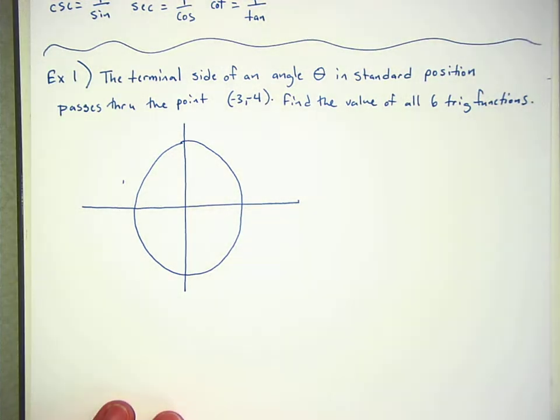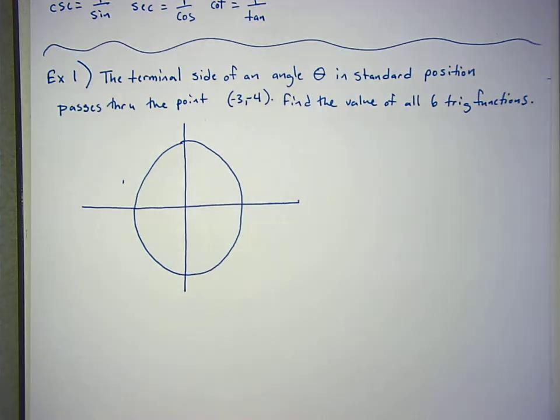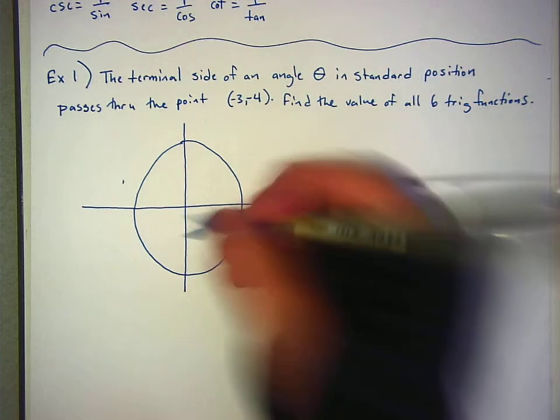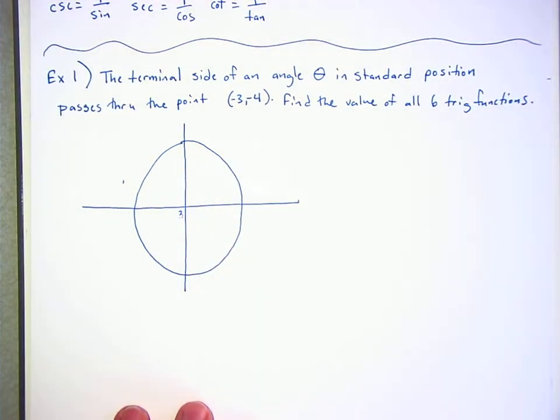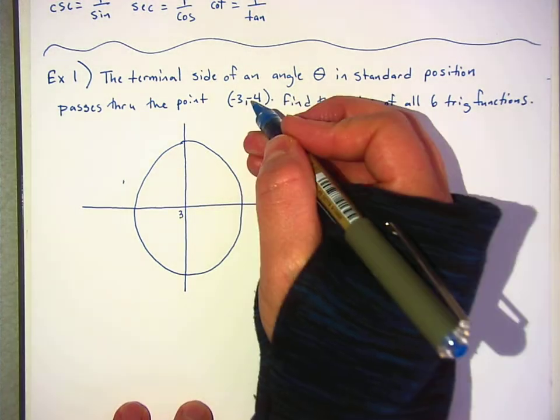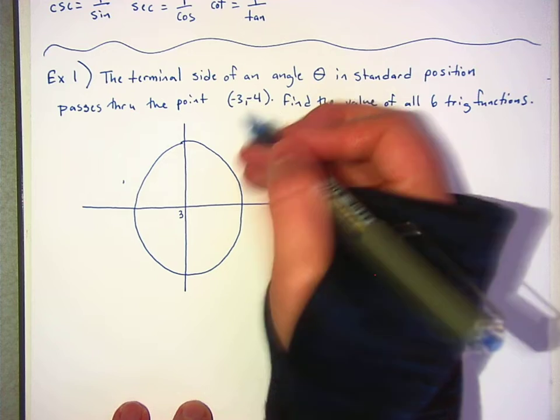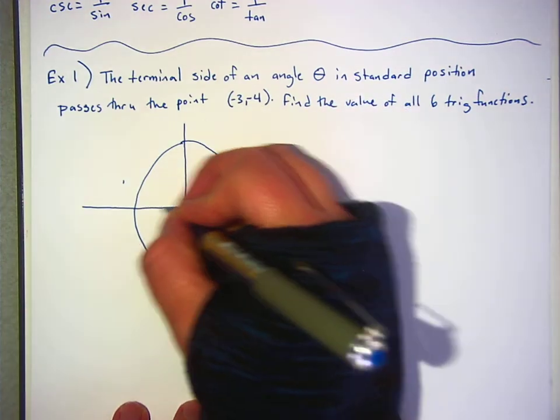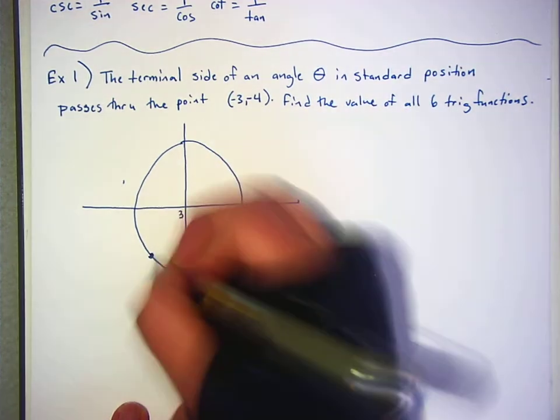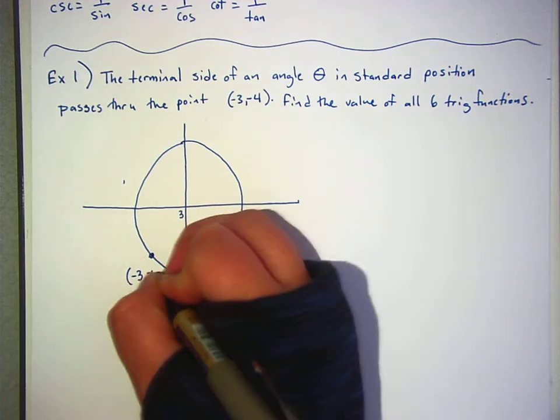All right, now it needs to pass through the point negative 3, negative 4. Where is the point? What quadrant is negative 3, negative 4 in? Yeah, that's the third quadrant, bottom left. So negative 3, negative 4. Let's say that that is like negative 3, negative 4. We're going to put it right here. We'll call that negative 3, negative 4 right there.